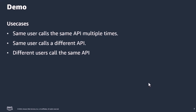During the demo, I will showcase three use cases. We will see what happens when the same user calls the same API multiple times. In the second demo, we will see what happens when the same user calls a different API. Lastly, we will see what happens when different users call the same API. In order to run this demo, I will use Postman to make API requests and X-Ray traces to identify what services were called in processing the request.